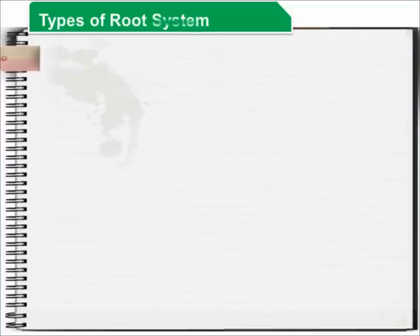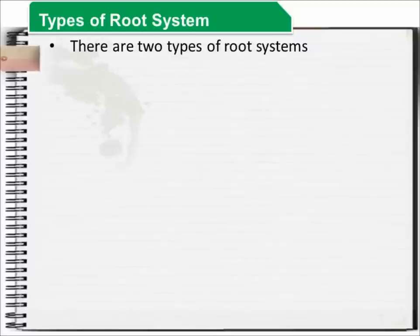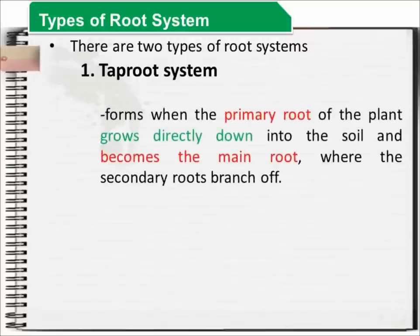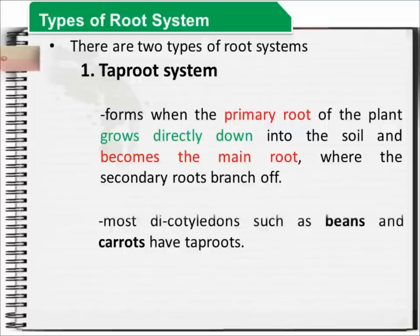We have two types of root system. The first is the taproot system, which is formed when a primary root grows down into the soil, and it is where the secondary roots branch off. Most of the dicotyledons have a taproot system.